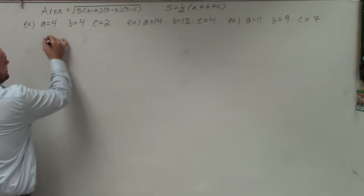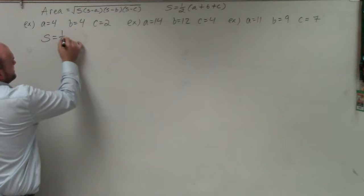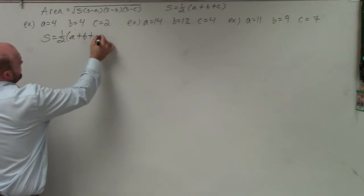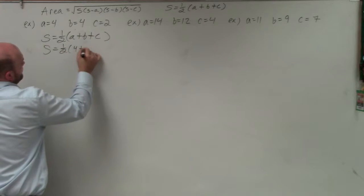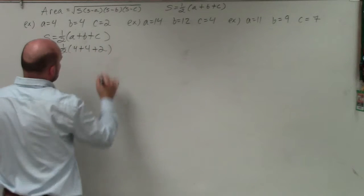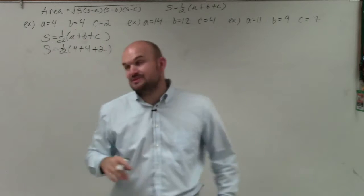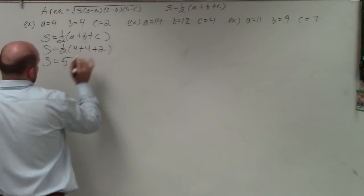So first thing we always want to do is identify our s, which in this case is going to be 1 half a plus b plus c. So s equals 1 half 4 plus 4 plus 2. So 4 plus 4 is 8 plus 2 is 10. So therefore, s equals 5.